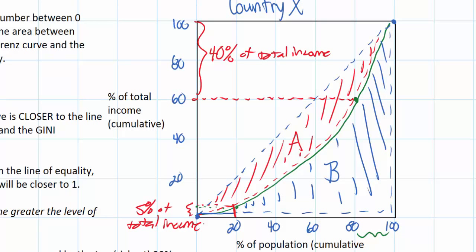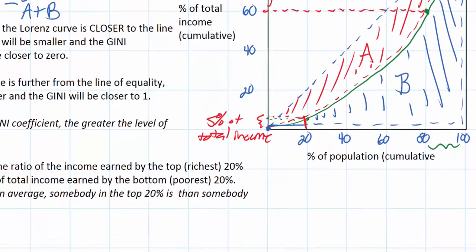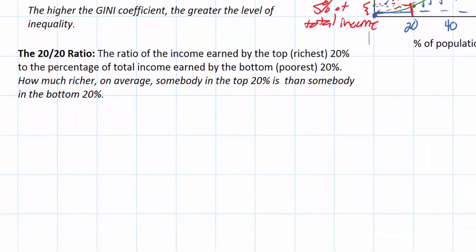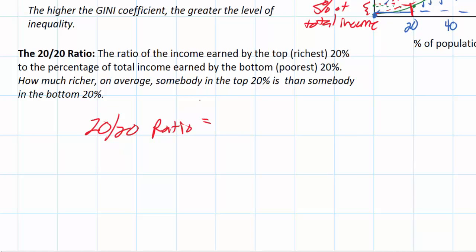So the question is: how much richer is the typical person in the top 20% than the typical person in the bottom 20%? We can find the 20-20 ratio like this: the 20-20 ratio equals the income earned by the top 20% over the income earned by the bottom 20%. That's a very simple calculation — it's 40% divided by 5%, so in hypothetical country X the 20-20 ratio is 8.